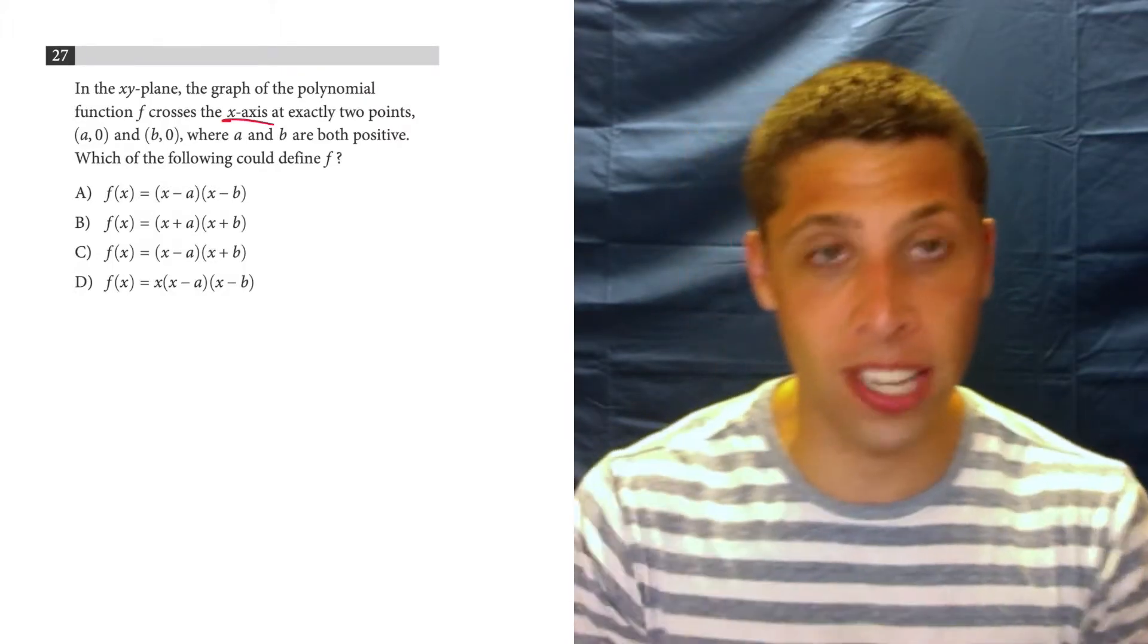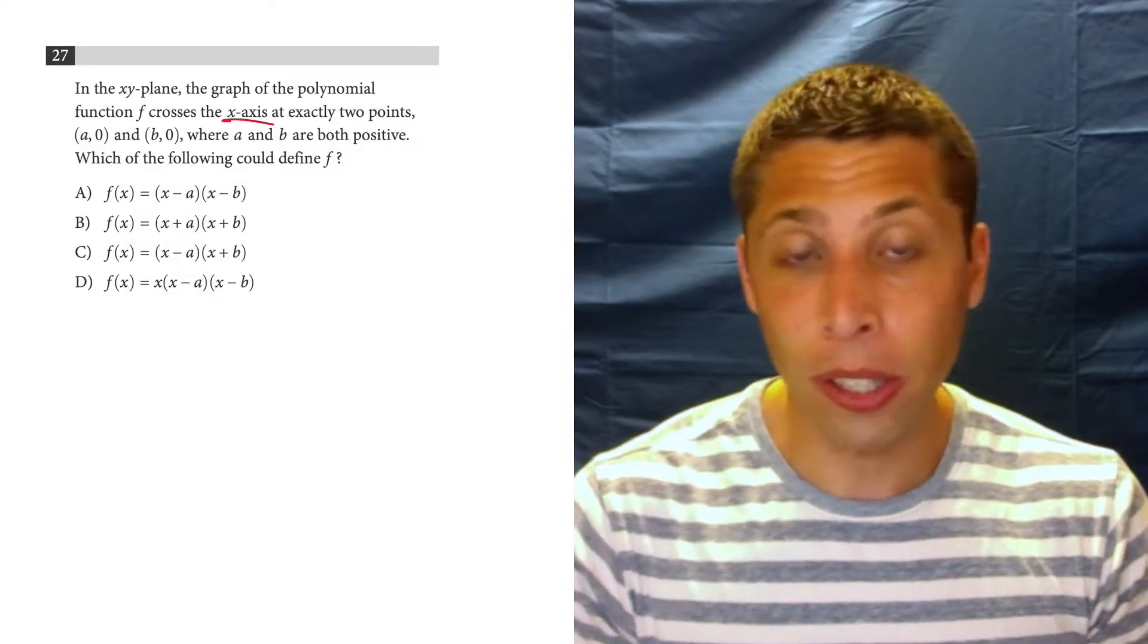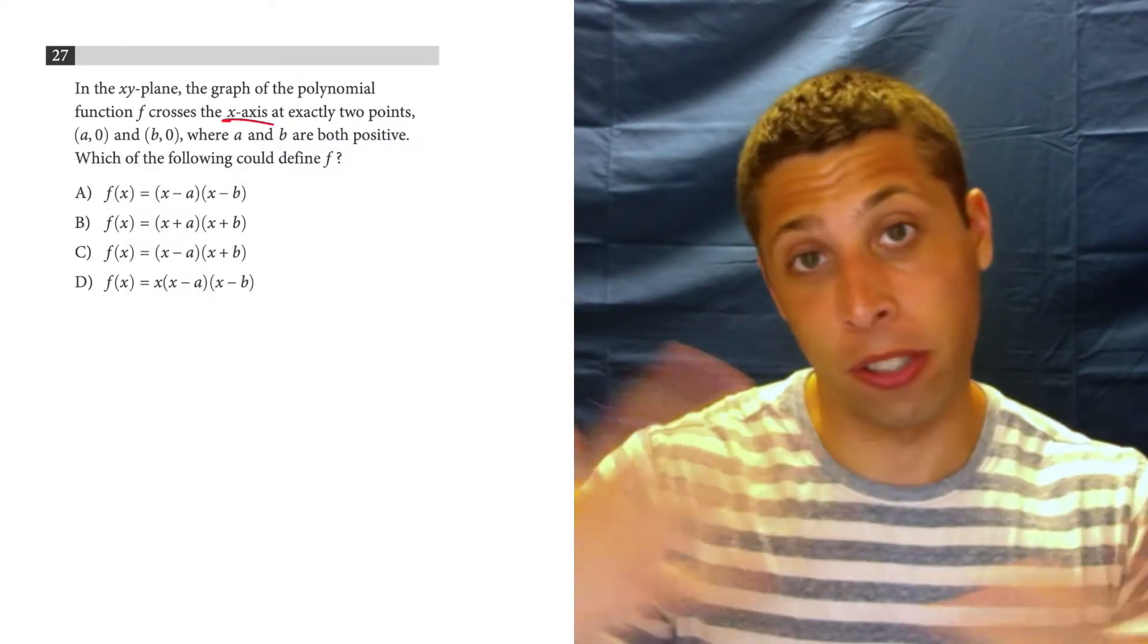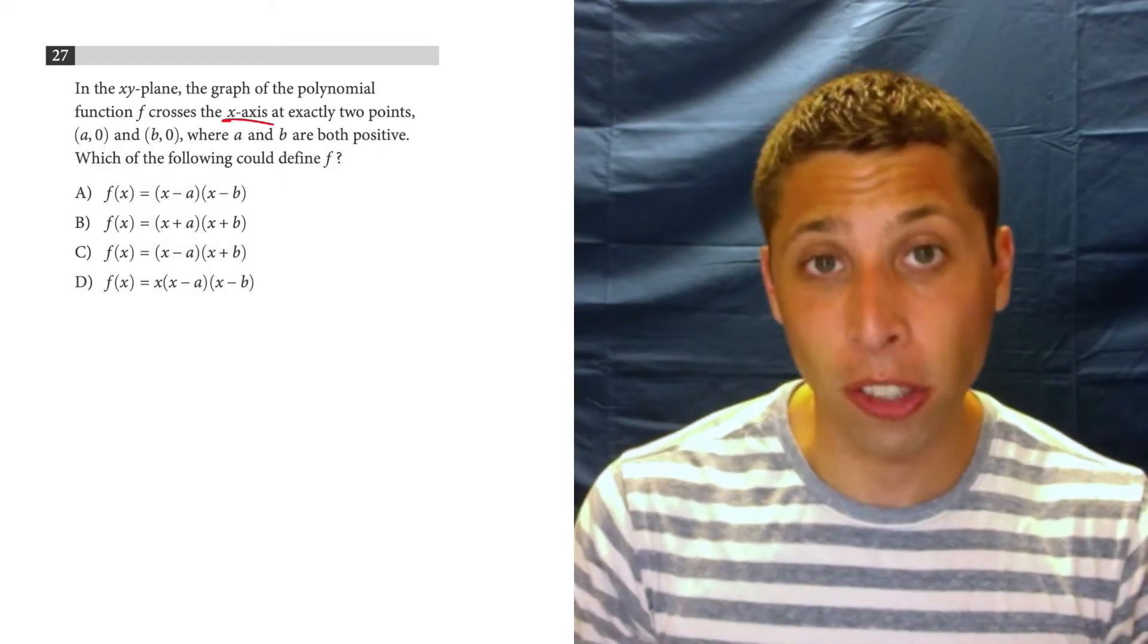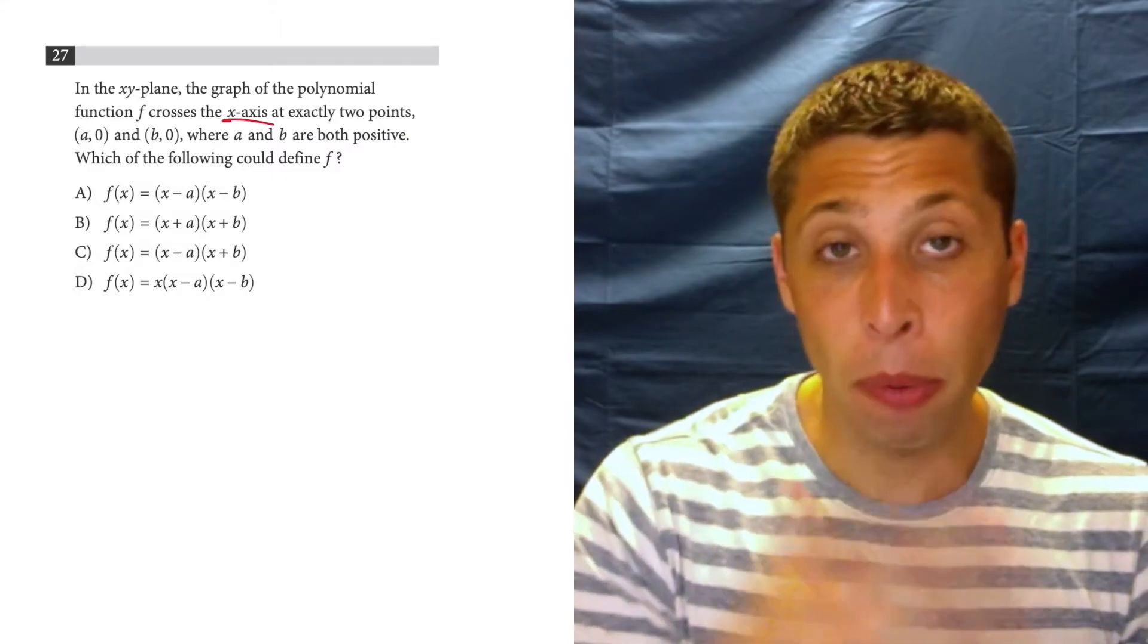We're talking about points where it crosses the x-axis at a0 and b0, and we know that when we have anything, whether it's a quadratic or a higher order function, that's what factoring gets us. And remember, when we factor, we're getting the terms kind of reversed.